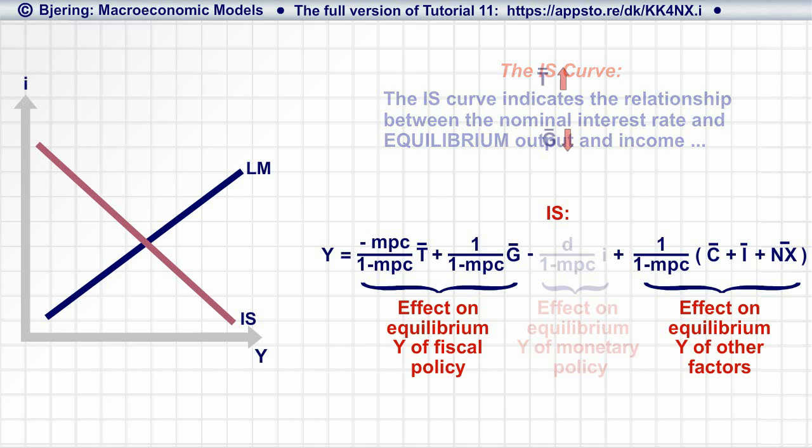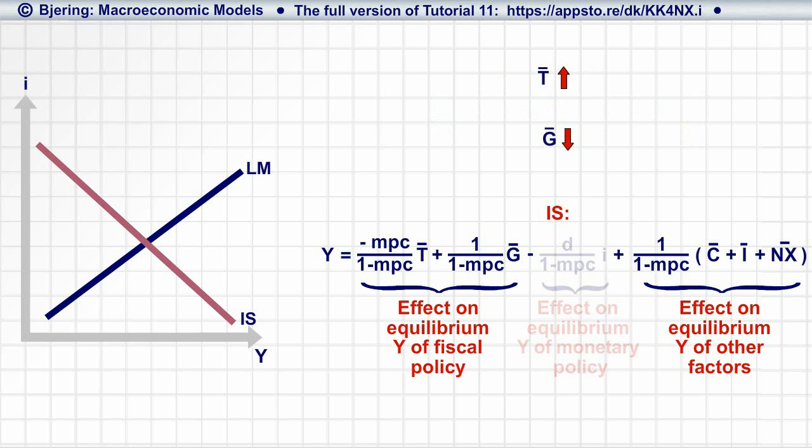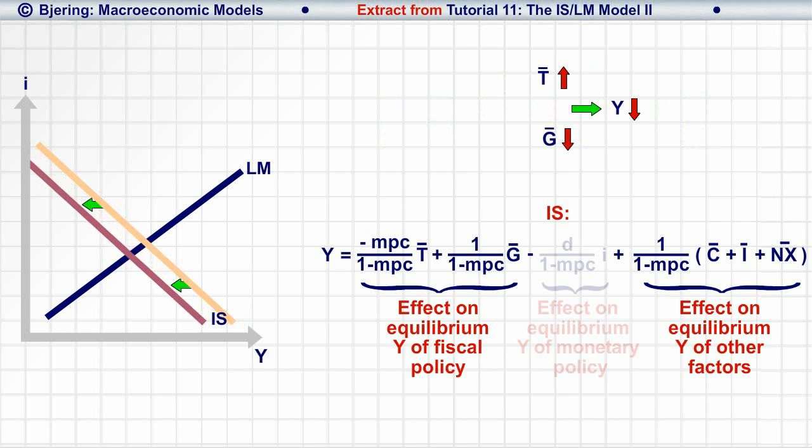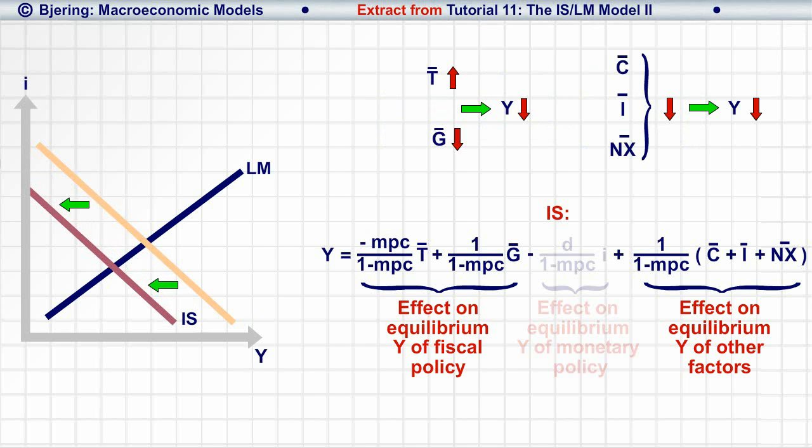Thus, an increase in T and or a decrease in G decreases Y at any interest rate, shifting the IS curve to the left, as does a decrease in C-bar, I-bar, or NX-bar. While a decrease in T and or an increase in G, C-bar, I-bar, or NX-bar shifts the IS curve to the right.